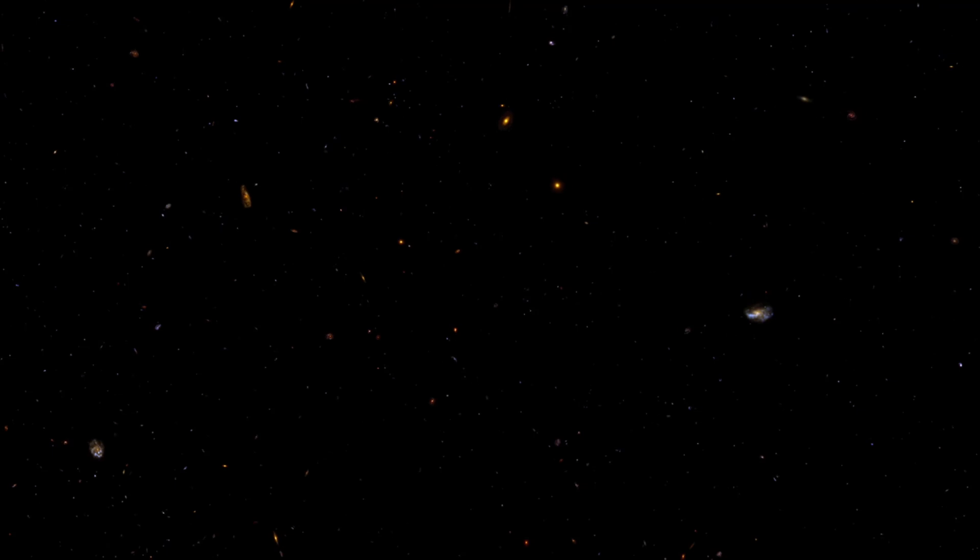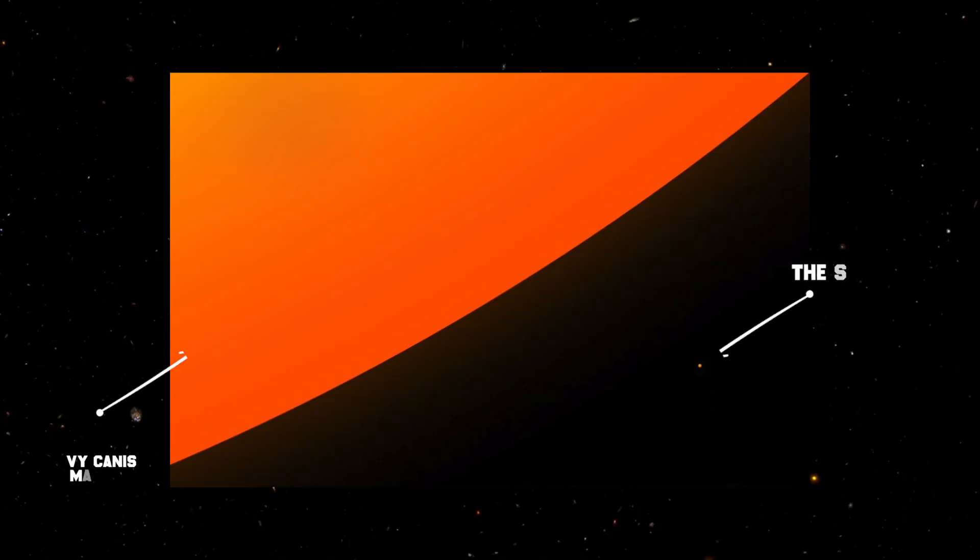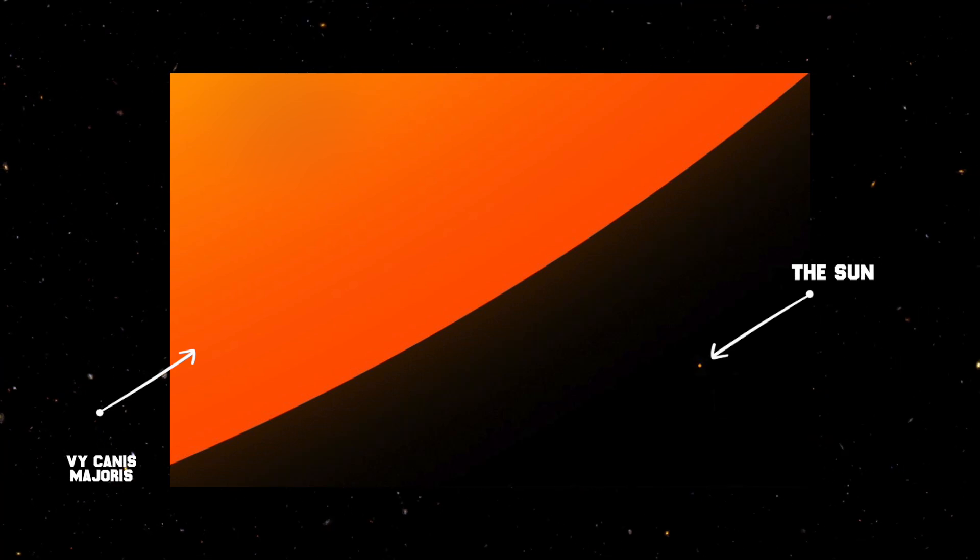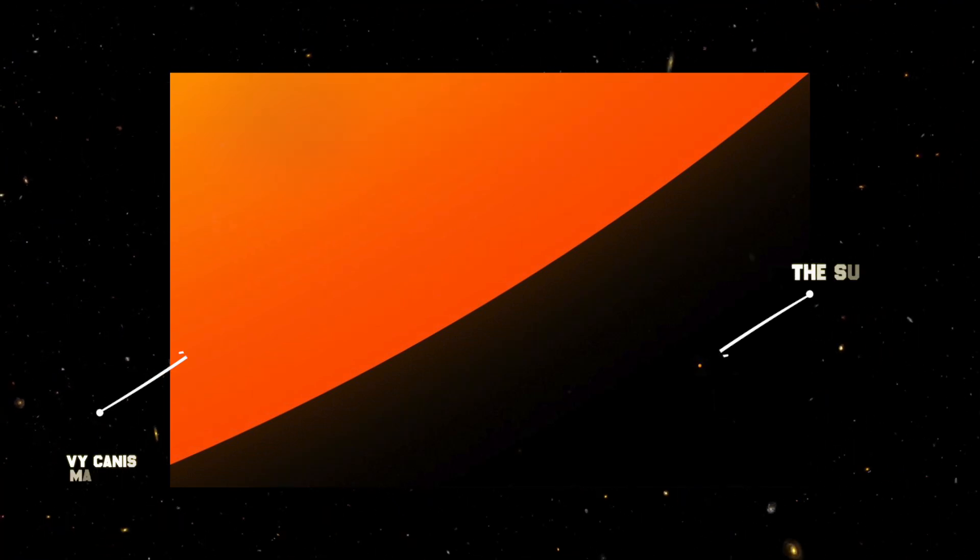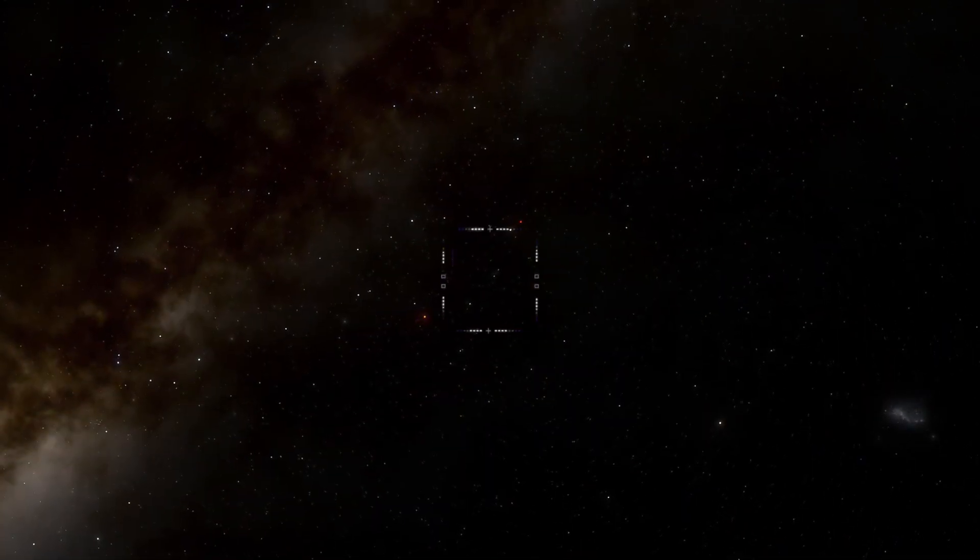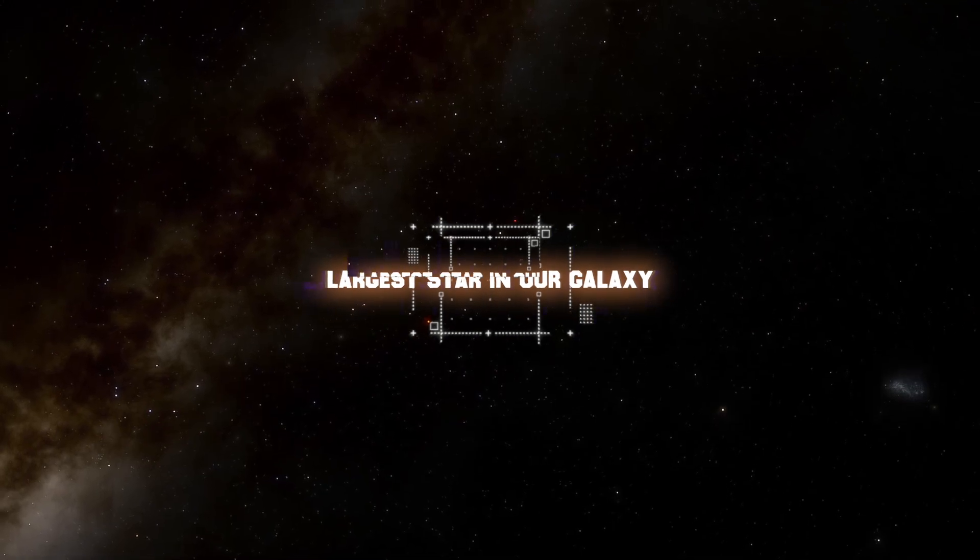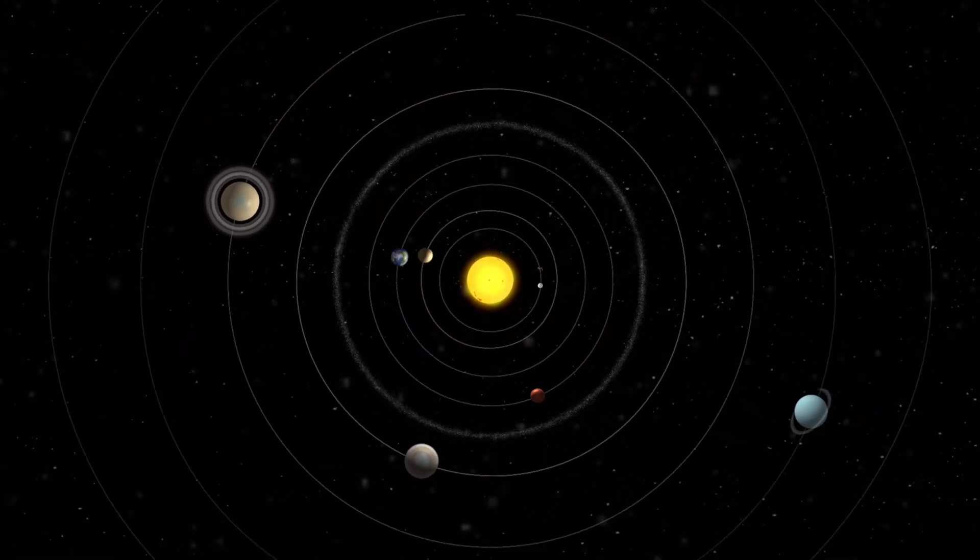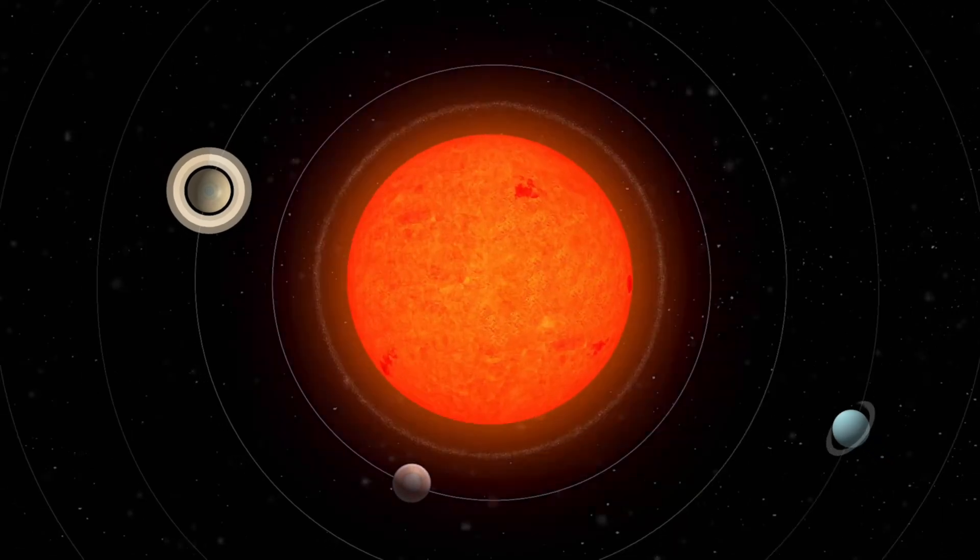But this star is no normal red giant, measuring in at between 15 and 25 times the mass of our sun, and over 1,400 times its radius, making it a contender for the largest star in our galaxy. If this star was to replace our sun in the solar system, its surface would nearly reach Jupiter.